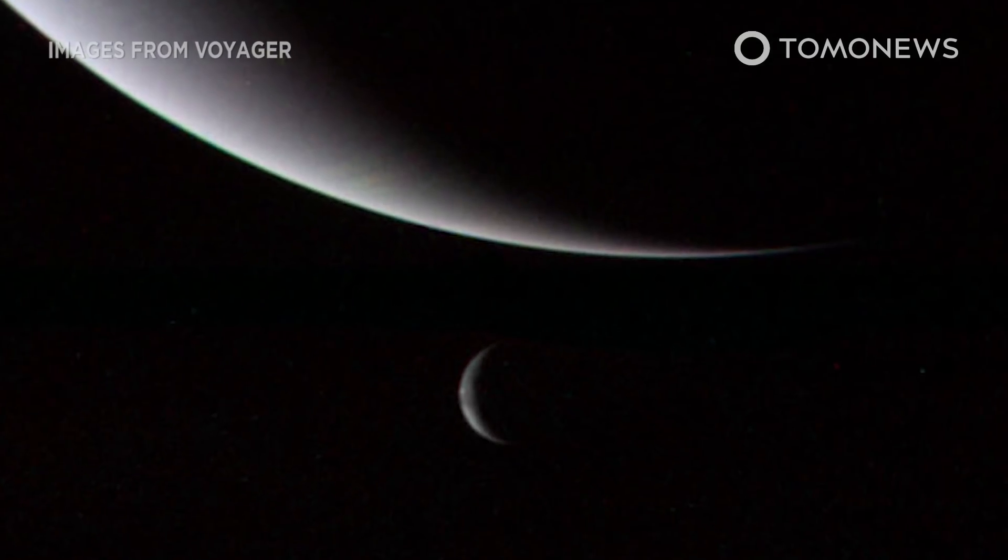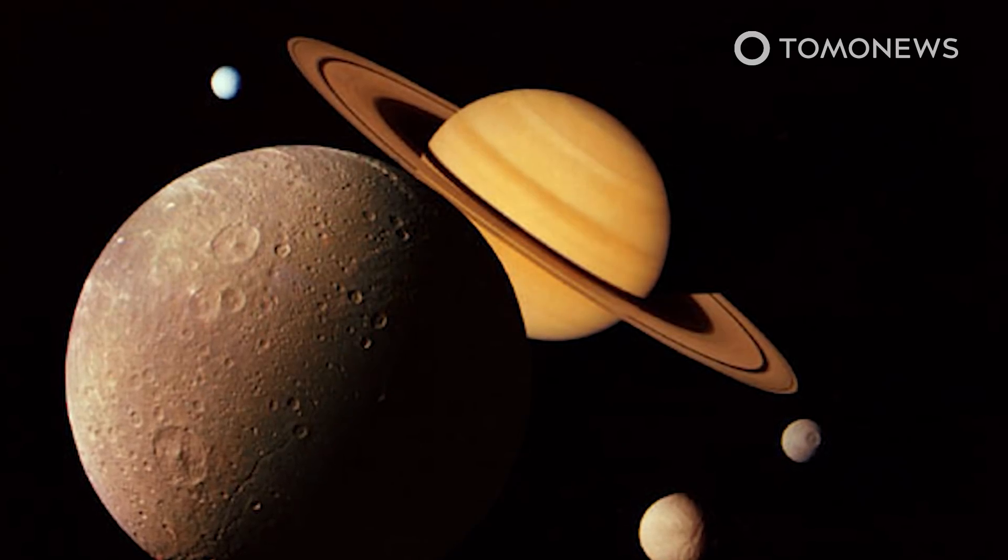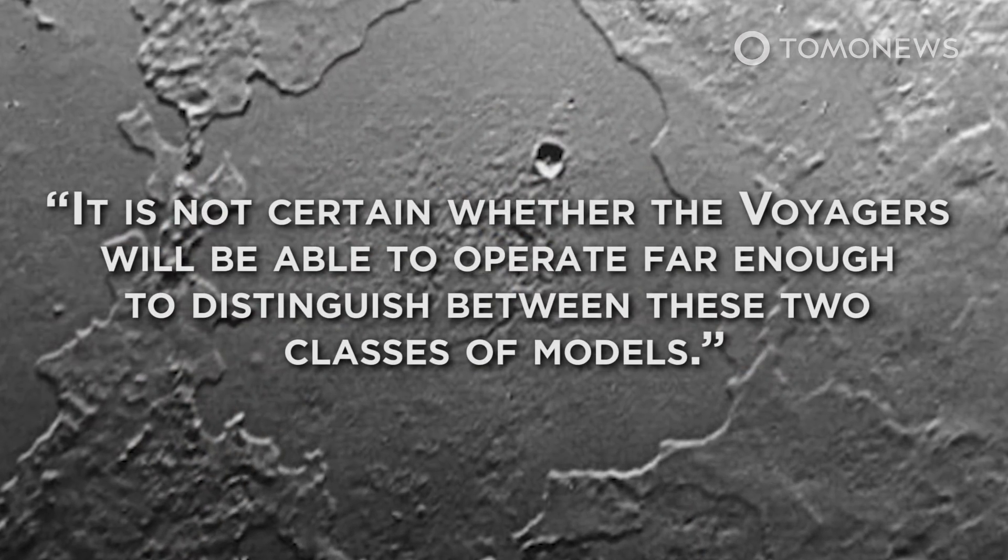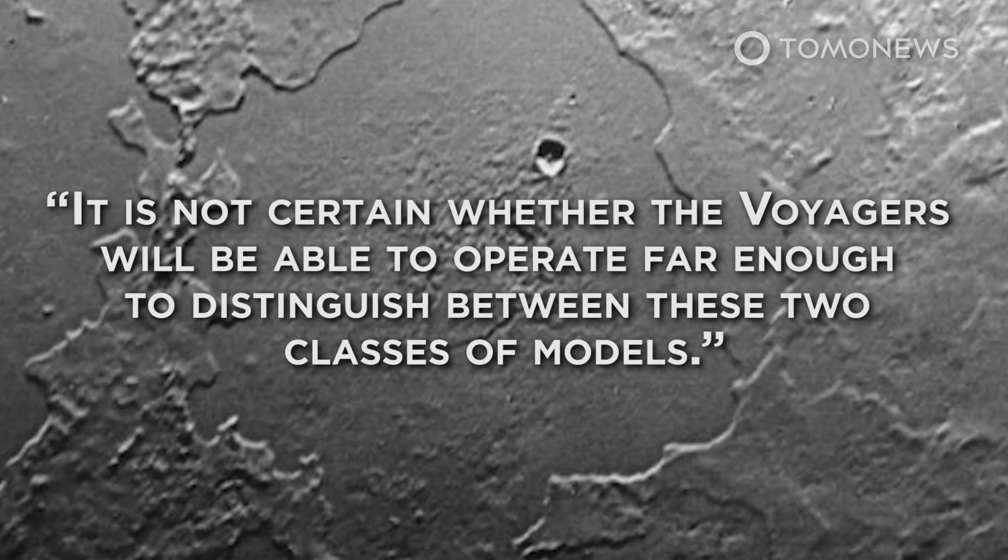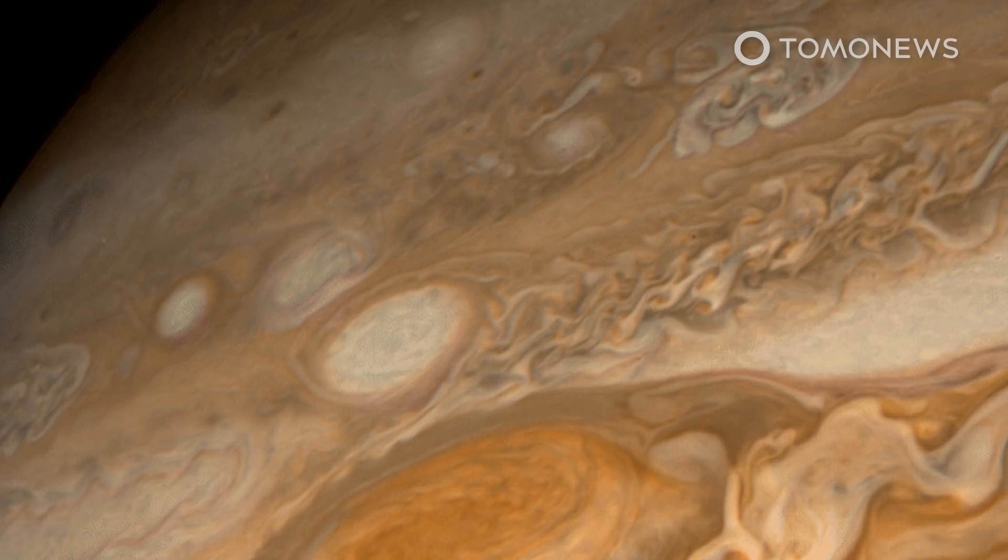More data is needed from the two Voyagers to try to untangle this mystery. However, as the authors of the study note, it is not certain whether the Voyagers will be able to operate far enough to distinguish between these two classes of models. Voyager mission team members estimate the spacecraft's transmitters will go quiet in the late 2020s or perhaps in the 2030s.